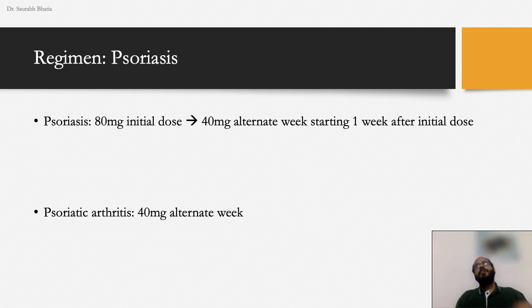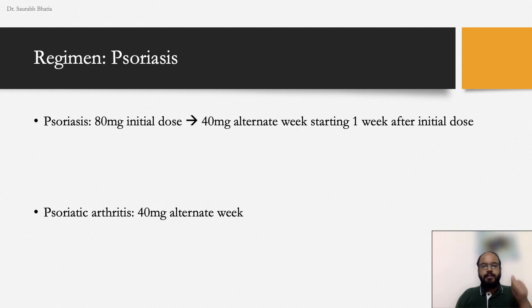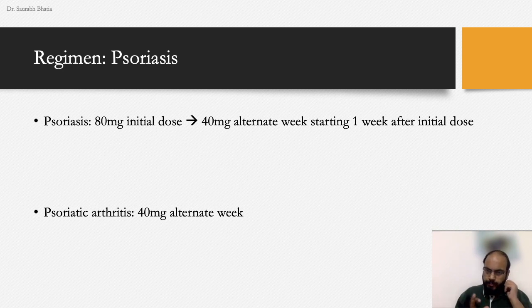In terms of uses, let's divide into FDA-approved and non-FDA-approved categories. FDA-approved dermatology uses of adalimumab are only two as of 2023: moderate-to-severe psoriasis in adult patients, and moderate-to-severe hidradenitis suppurativa in adult patients. All other uses are non-FDA approved.